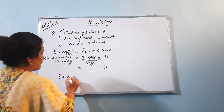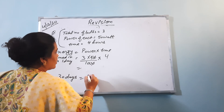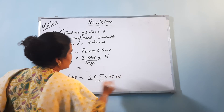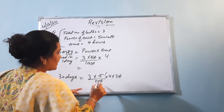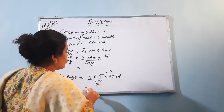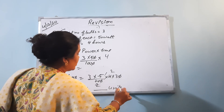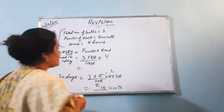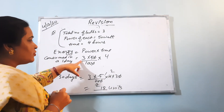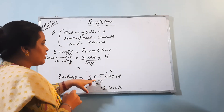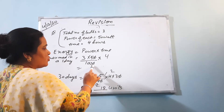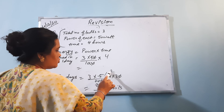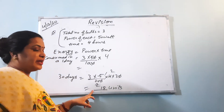For 30 days, multiply by 30: 3 into 50/1000 into 4 into 30. Simplifying: 3 into 5/100 into 4 into 30, cancelling zeros gives 3 into 5 into 4 into 30 divided by 100, which equals 18 units. So 18 kilowatt-hours are consumed in 30 days. In this type of question, take power in kilowatts and time in hours when calculating energy consumed, then multiply by the number of days.